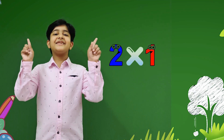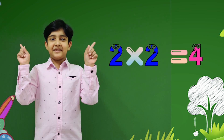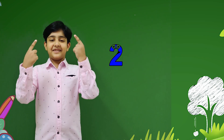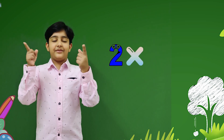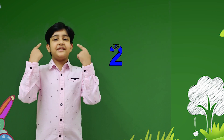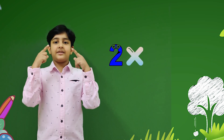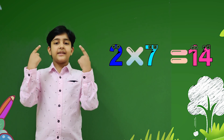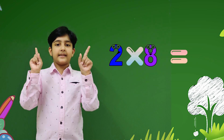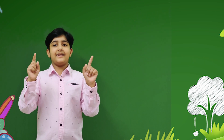2 ones are 2, 2 twos are 4, 2 threes are 6, 2 fours are 8, 2 fives are 10, 2 sixes are 12, 2 sevens are 14, 2 eights are 16, 2 nines are 18, 2 tens are 20.